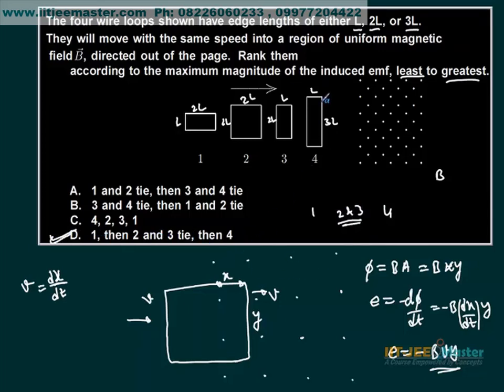Maximum EMF will be generated in this one because here L is maximum. B, v, L - L is 3L here, L is 2L here, and L is L in the first case. You can do any problem like this.